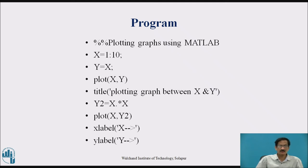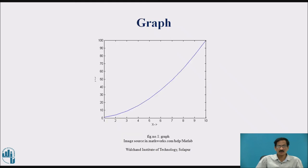Plotting a graph using MATLAB: x is equal to 1 colon 10, y equals x, plot x and y — meaning x and y take the same values. The plot includes a title, x label, and y label. For y2 equal to x squared, we use plot(x, y2). The x label gives the name to the x coordinate, and y label gives the name to the y coordinate along with the title.